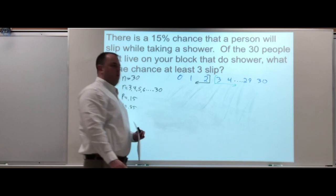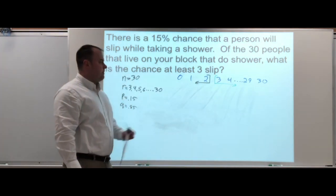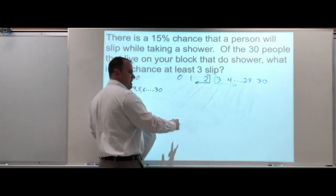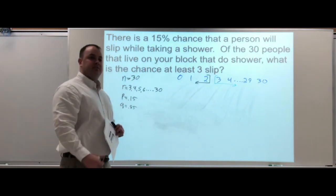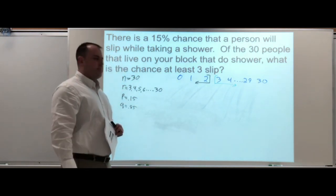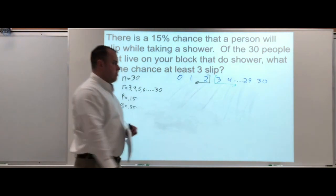The complement would be zero, one, and two. So if we do the formula for zero, one, and two and add those together, that's going to be the opposite. We can use that property to find our probability from three all the way up to thirty.